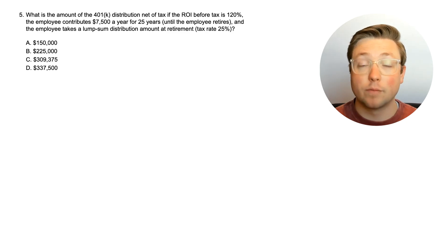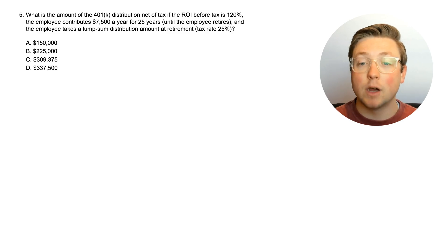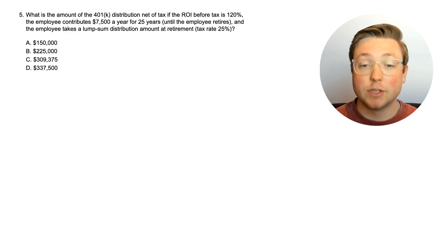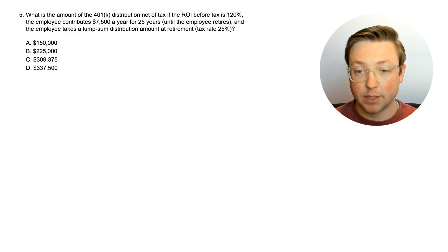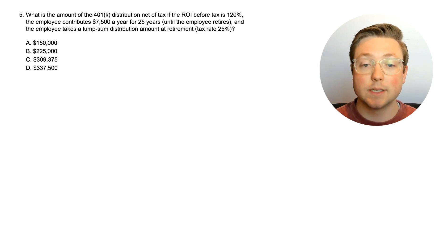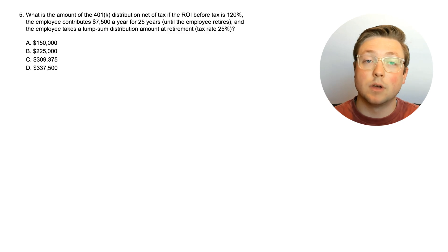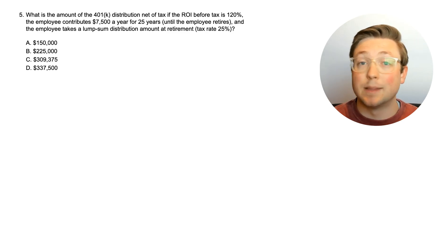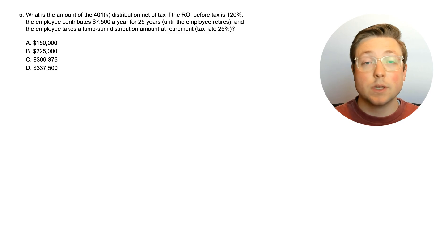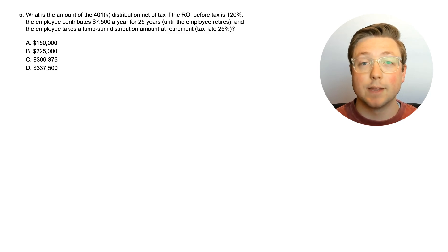Here we are at question 5 — another 401k plan. What is the amount of the 401k distribution net of tax if the ROI before tax is 120%? The employee contributes $7,500 a year for 25 years until retirement and takes a lump sum distribution with a tax rate of 25%. This is a 401k, not a Roth IRA, so there is tax at distribution — unlike a Roth IRA where we account for tax at the beginning.